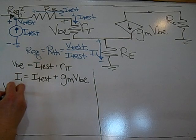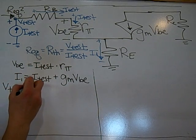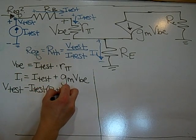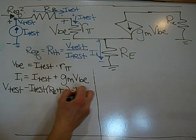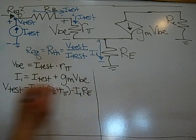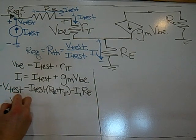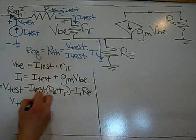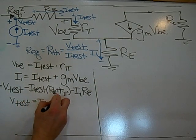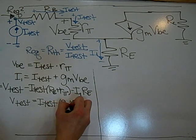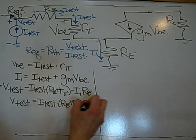So V-test, minus I-test, Rb plus R-pi, minus I-1 Re. And that is all equal to zero. So V-test is equal to I-test, Rb plus R-pi, plus I-1 Re.